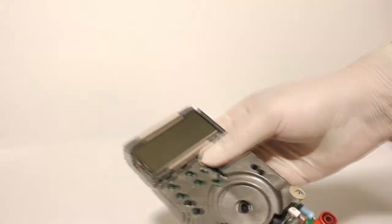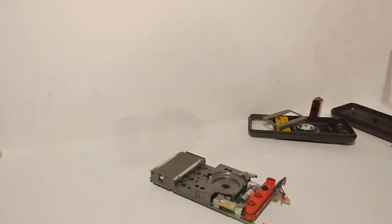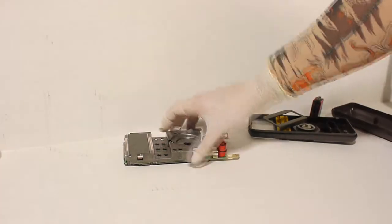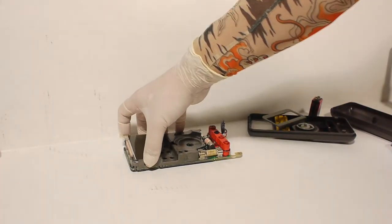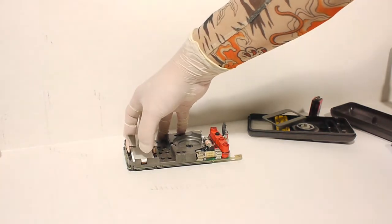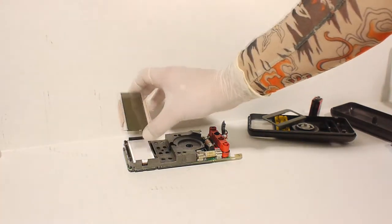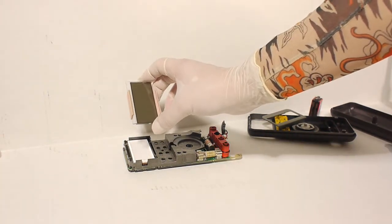Step seven: remove the LCD from the main PCB. This may be accomplished by hand, or if necessary, a small flathead screwdriver or similar tool. Simply pry along the sides gently.